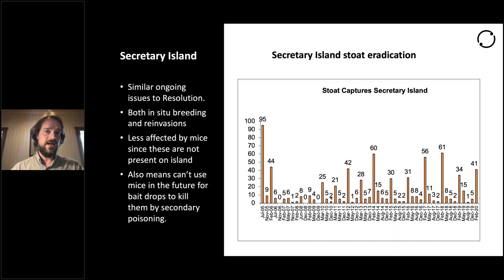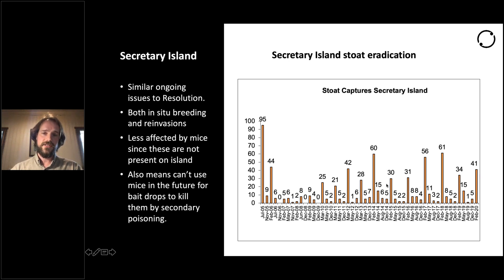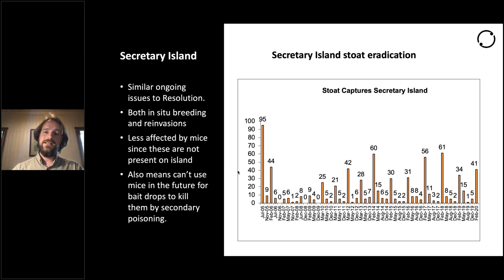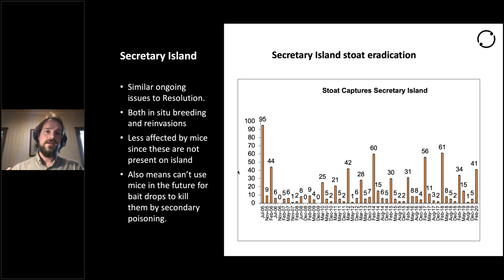Secretary Island is a very similar island — about 8,000 hectares, similar in size to Waiheke — with very similar trends: 95 caught in the first round, then initial breeding, still getting stoats throughout, peaking around 50 each summer. My genetics work shows this is largely from in-situ breeding — there are females that are avoiding all the traps. The big recent peak on Resolution was because of a beech mast — high mice densities, therefore a lot of stoats were born. Secretary Island doesn't have any other mammals now other than stoats, and therefore it's more consistent, though the number of invaders that swim across will increase during beech mast years.